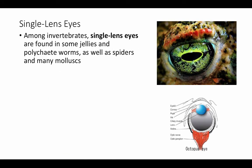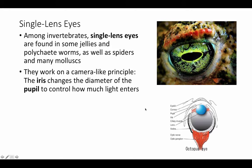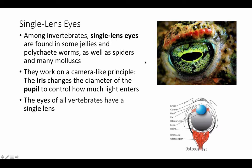Now let's think about simple eyes, or what your book refers to as single-lens eyes. Among invertebrates, single-lens eyes are found in some jellies and polychaete worms, as well as spiders and many mollusks, such as the octopus eye shown in the anatomical drawing here. They work on a camera-like principle: there's an iris that changes the diameter of the pupil to control how much light enters. The iris is the colored portion that can get larger or smaller to let more or less light in. The eyes of all vertebrates are of the single-lens type.